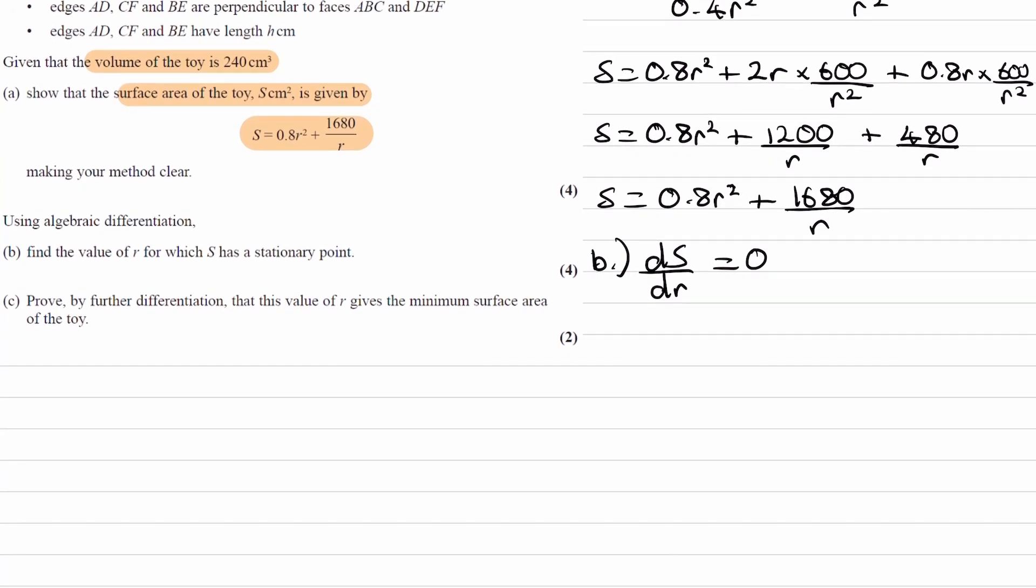So that's what we want to work out. We can rewrite s as 0.8r² plus 1680r⁻¹. That'll make it a little bit easier to differentiate. And then ds/dr would be 1.6r minus 1680r⁻². We then want to set this equal to 0.